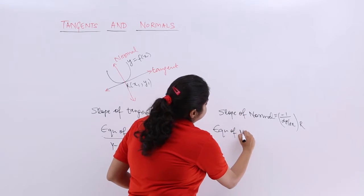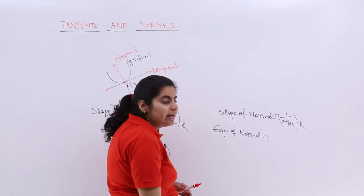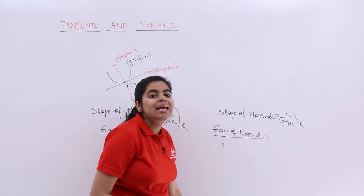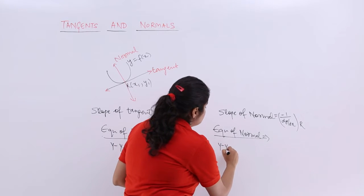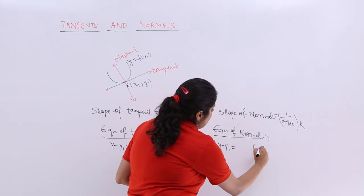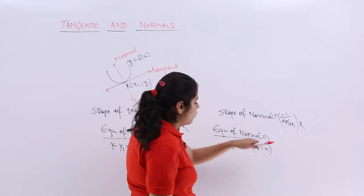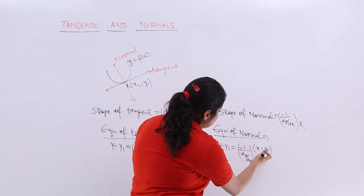The equation of normal is given by y-y₁ equals m(x-x₁). So it is nothing but y-y₁ equals m(x-x₁). Now what is your m, the slope? Minus 1 upon dy/dx at the point r. So that is important.